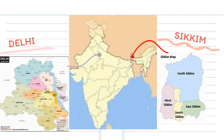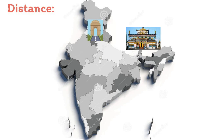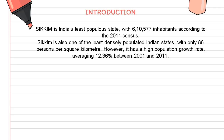Here is the location of Delhi and Sikkim on the map of India. Moving on to the distances between them — the distance between Delhi and Sikkim is about 1,603 kilometers.